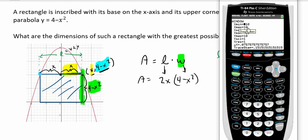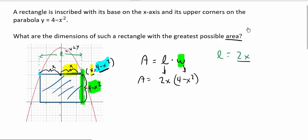I'm in a standard window that has my x min and x max going from negative 10 to 10. If you remember what x is in my problem, x is half of the length of my rectangle. It looks like the widest rectangle you could draw would be from negative 2 to 2, so I'm changing my x min and x max to those values.